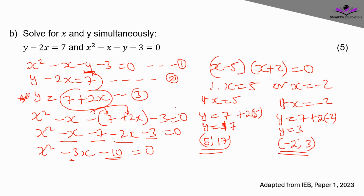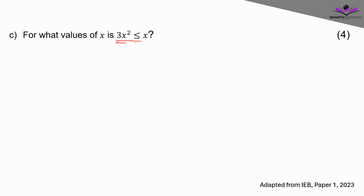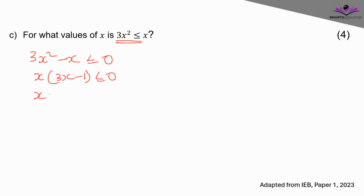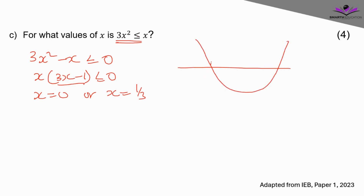For what values of x is 3x² ≤ x? Writing in standard form: 3x² − x ≤ 0. Factorizing: x(3x − 1) ≤ 0. Finding critical values — from x = 0 and from (3x − 1) = 0, x = 1/3. We want where the graph is less than or equal to zero, which is between the two critical points 0 and 1/3.